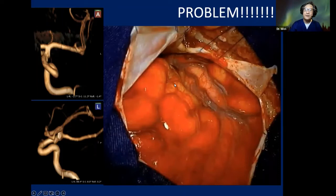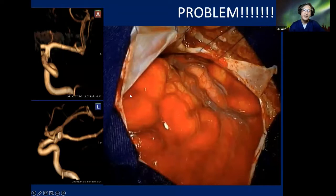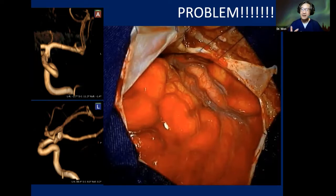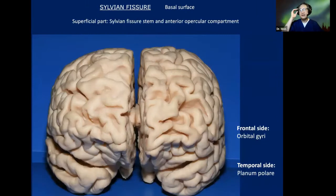There is an additional challenge: the patient had a subarachnoid hemorrhage. You can see this very angry, swollen brain. The superficial landmarks are all gone. It is sometimes very difficult to identify anatomical landmarks with a brain like this. We will talk about this too, later.